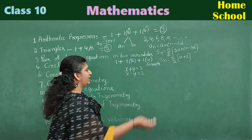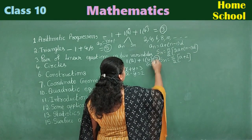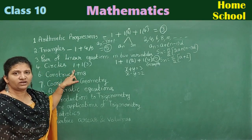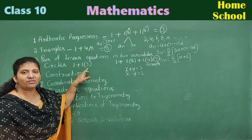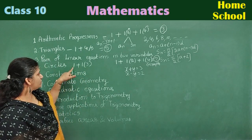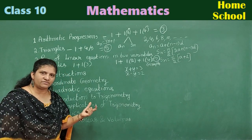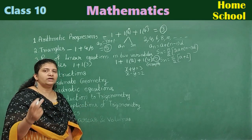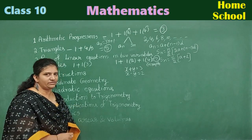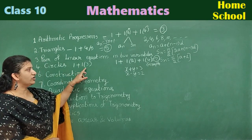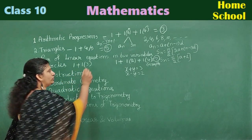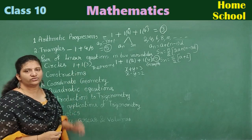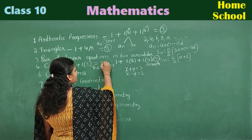Total we can guess seven marks from Pair of Linear Equations. Chapter four is Circles. We can guess one multiple choice and one compulsory three-marks question. For one mark, a circle with tangents will be given — either the central angle is given and you find the tangential angle, or vice versa. For three marks, there are two theorems and one is compulsory. Total four marks from this chapter.